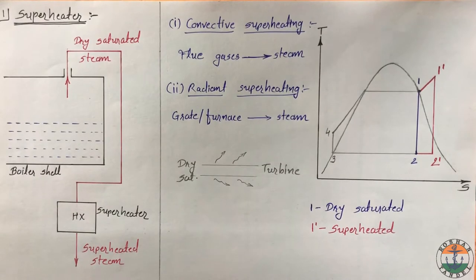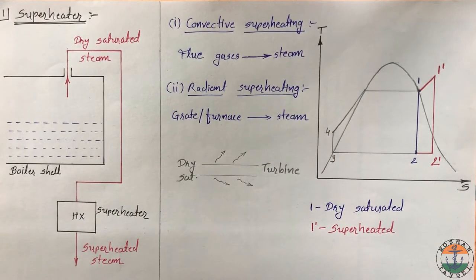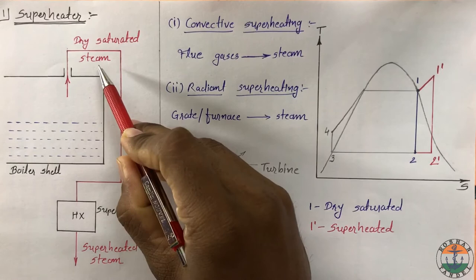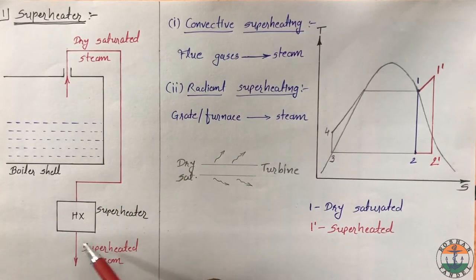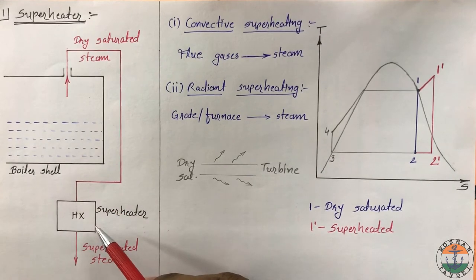The first boiler accessory is the super heater. In a super heater, saturated steam taken out from the boiler shell is circulated in front of flue gases or grate.